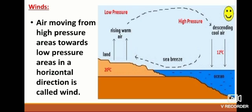Wind: Air moving from high-pressure areas towards low-pressure areas in a horizontal direction is called wind. Winds blow from high to low pressure areas, and their speed depends on the amount of difference in air pressure.